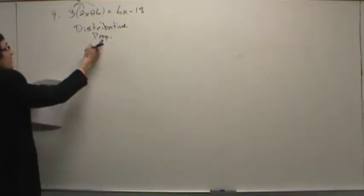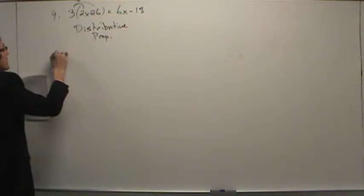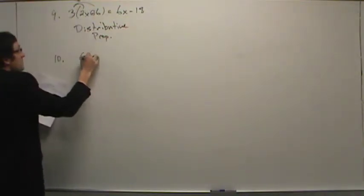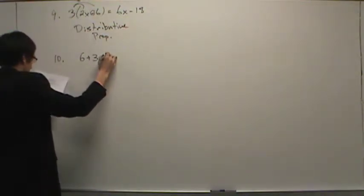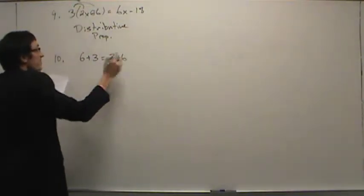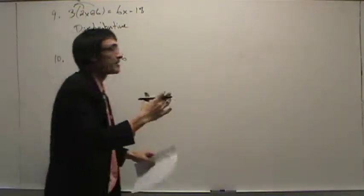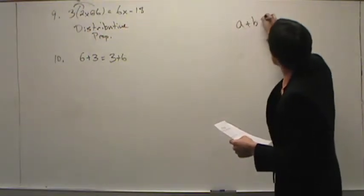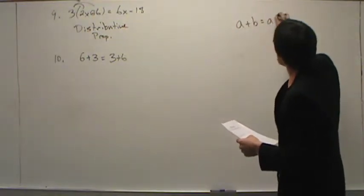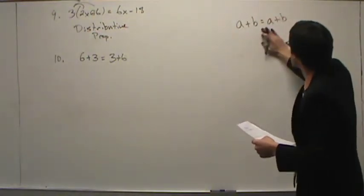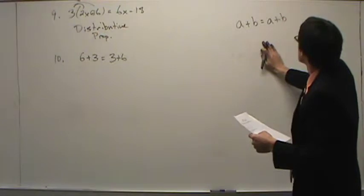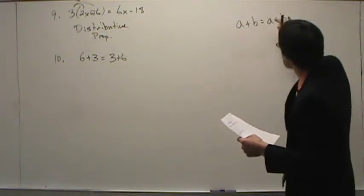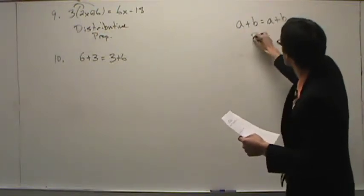You may abbreviate — abbreviating is fine. Number ten: six plus three is equal to three plus six. Before we do this, here's a side example: a plus b is the same as a plus b. Did anything change? Did any numbers change location? No. Something is equal to itself.